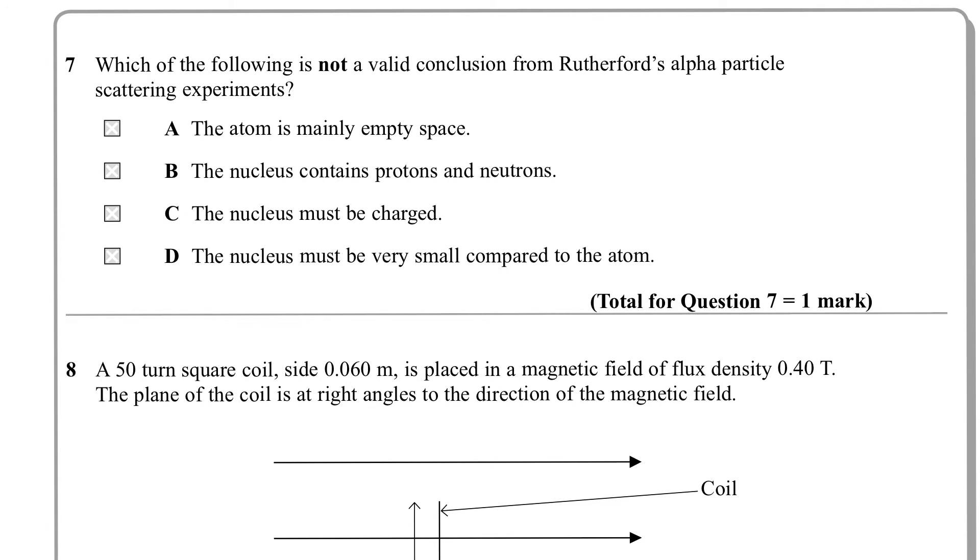Question 7. Which of the following is not a valid conclusion from Rutherford's alpha particle scattering experiments? So we're looking for the not here. The atom is mostly empty space - that's true. The nucleus contains protons and neutrons - not sure about that. The nucleus must be charged - that's true, that comes out of Rutherford. The nucleus must be very small compared to the atom - that ties in with the first one. Rutherford's experiment can't tell us the contents of the nucleus, so we're talking B there.